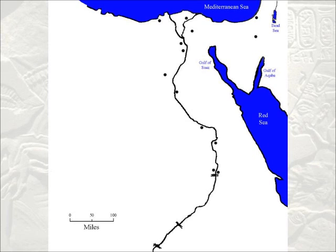Moving north from the Red Sea, in the northeast corner of the map we see a small tiny blue lake — that is the Dead Sea, which we've already marked on our Mesopotamian map. So those are the five major bodies of water: the Mediterranean Sea, the Red Sea, the Gulf of Suez, the Gulf of Aqaba, and the Dead Sea.